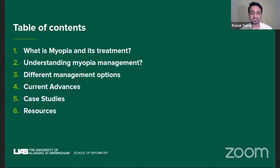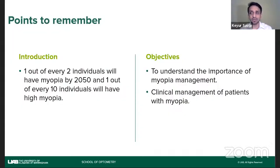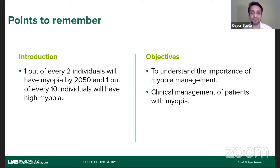The key point I really want you to take away from this whole talk is to remember that by 2050, one out of every two individuals will have myopia, and one out of every ten individuals will have high myopia. As an optometrist, refraction and refractive error is a big part of our work and the service we provide to our community. If you are a practicing optometrist going forward, it's important that you understand this topic so that you can treat these patients, as there will be a lot of them as per current trends.